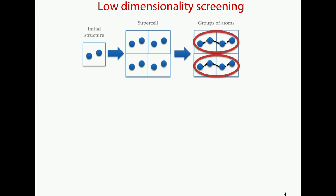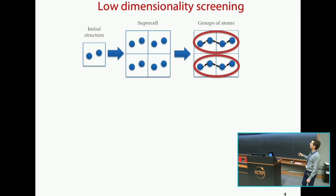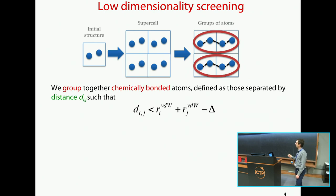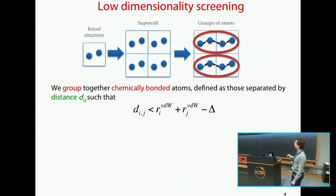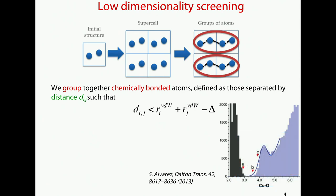Let me begin with the algorithm to screen those layers. The idea is fairly simple: you have an initial structure — I draw it in 2D here, but you have to imagine a 3D one. You build a supercell and then try to identify atoms that are chemically connected. Our definition of chemical connection is just based on interatomic distances: you look for atoms for which the distance between them is smaller than a certain value given by the sum of van der Waals radii minus some quantity delta.